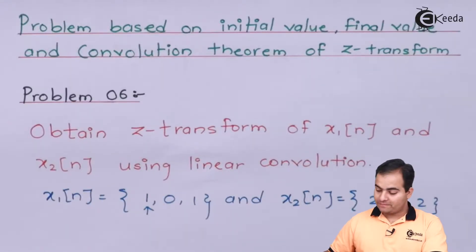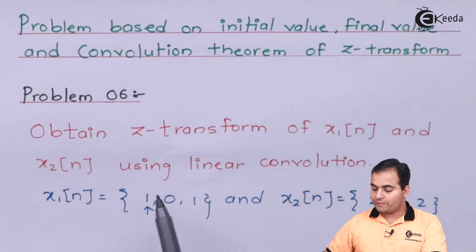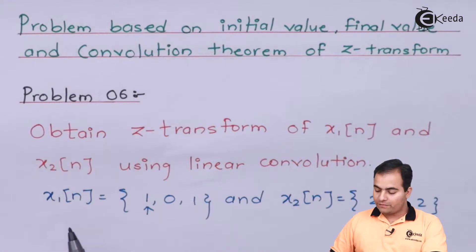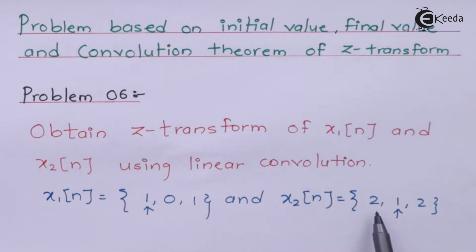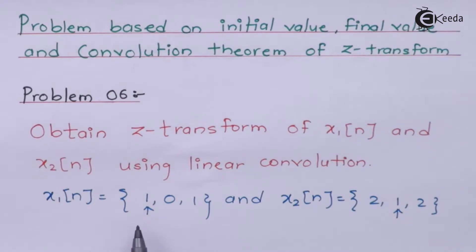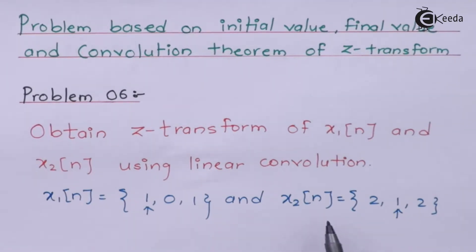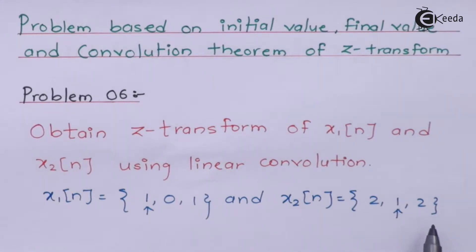Problem number 6: obtain the Z transform of X1 of N and X2 of N using linear convolution. X1 of N is given as {1, 0, 1} and X2 of N is given as {2, 1, 2}. In X1 of N, the arrow is on the leftmost bit, so the origin is at the leftmost position and the remaining samples are a positive sequence. In X2 of N, the origin is marked at the center, so we have one negative and one positive sample sequence.